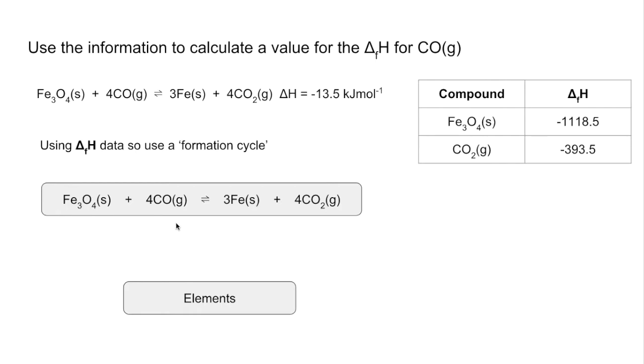So the next thing we'll do is put all the arrows on. The first one we'll put on is this one here. We're going from elements to one mole of Fe3O4. That's going to have an enthalpy change of minus 1118.5 and I've got that from the table.